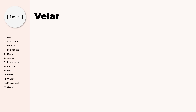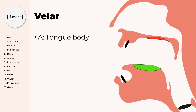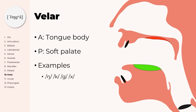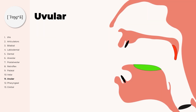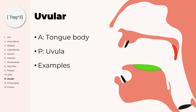Velar consonants are also produced with the tongue body, but now against the soft palate, which is even further back in the mouth. Velar consonants are for example NG, K, G, or W. Like palatal and velar sounds, uvular sounds are also produced with the tongue body being the active articulator, but the passive articulator is the uvula. Examples for uvular consonants are for example the uvular R sounds, which are found in French.